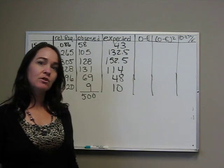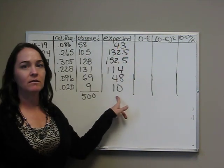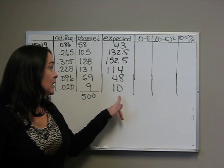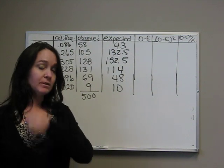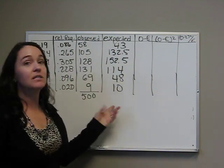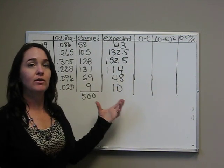The assumptions are met because all of these expected values are greater than 1. And remember, we only can have 20% that are less than 5, and we have 0% that are less than 5. So the assumptions are met.